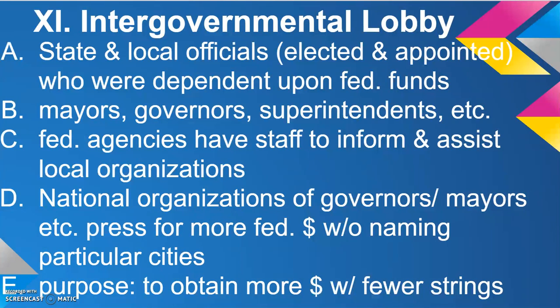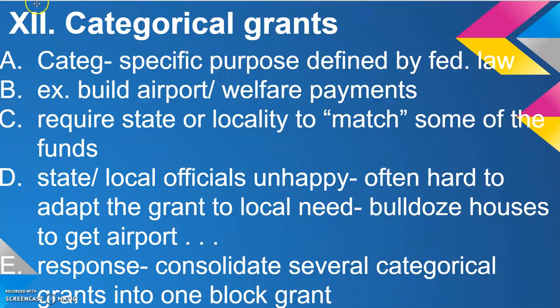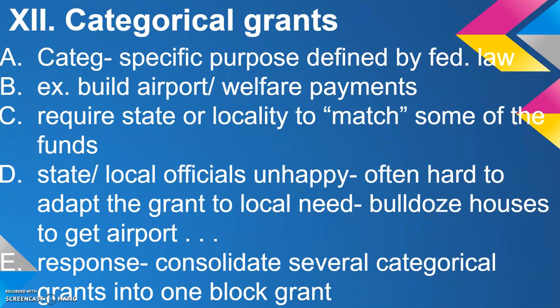Categorical grants are designed by federal law to serve a specific purpose — for example, building an airport or making welfare payments — and they require the state or locality to match some of the funds. This does not make state and local officials happy because it can be hard to adapt the grant to local needs. For instance, you may have to bulldoze houses to build an airport where the federal government specifies, which can be locally unpopular and politically damaging.